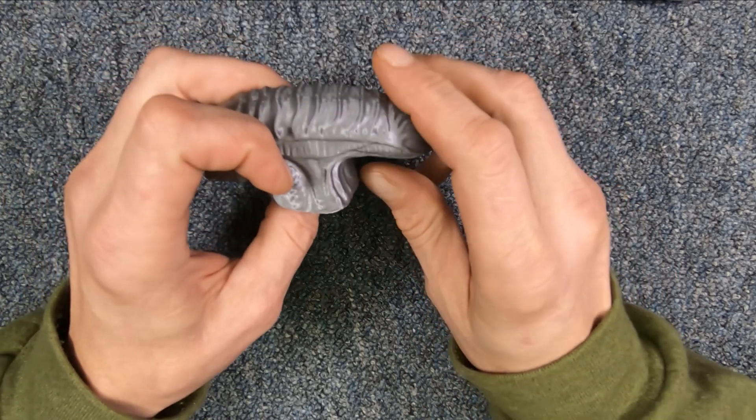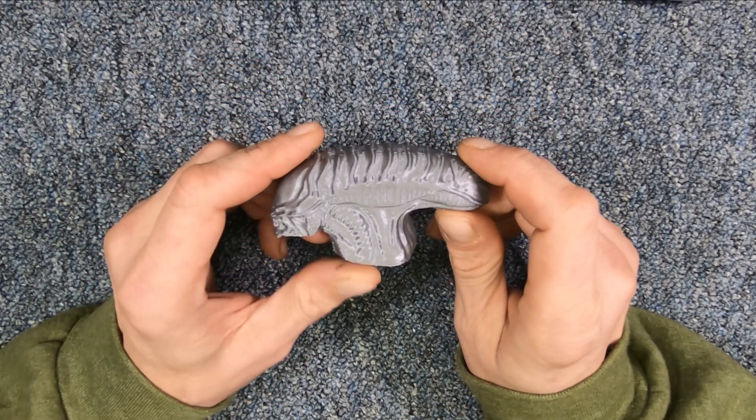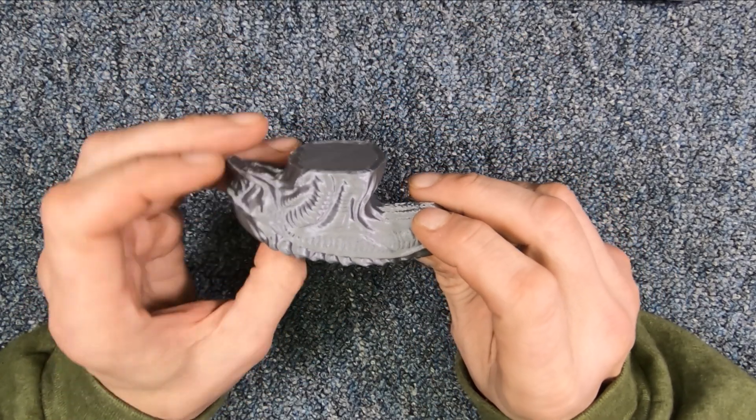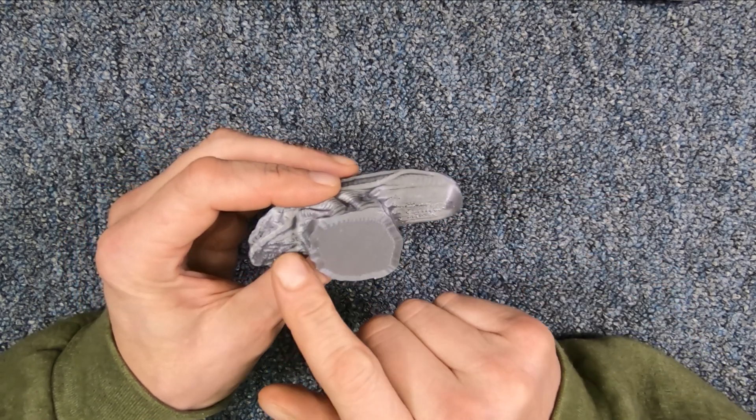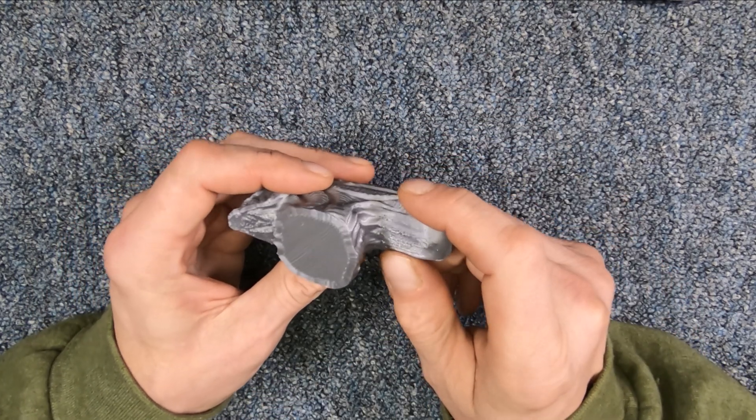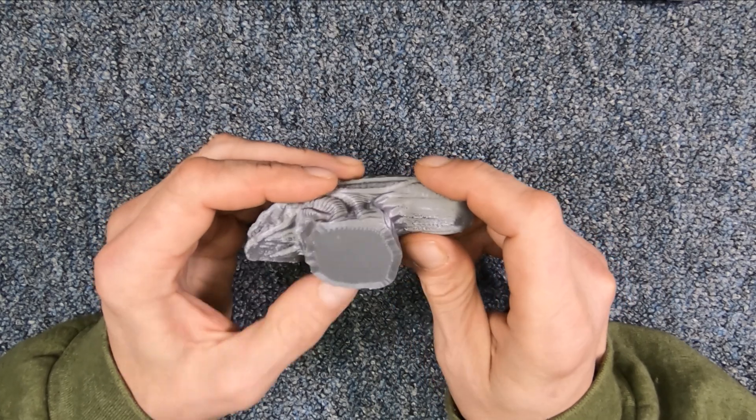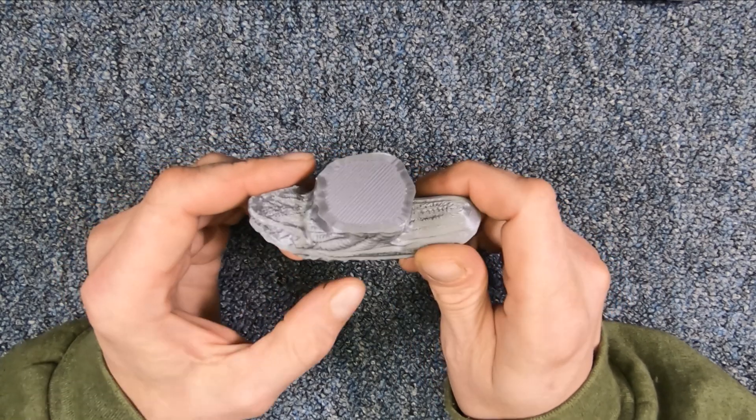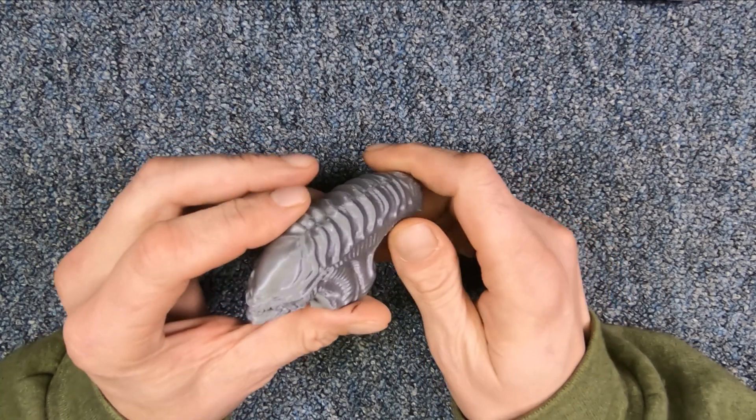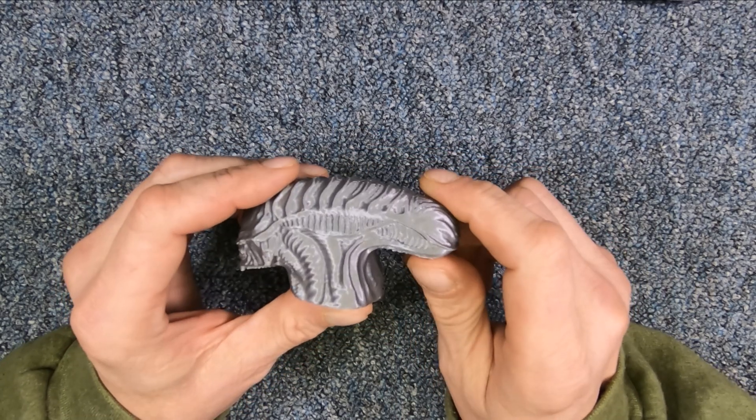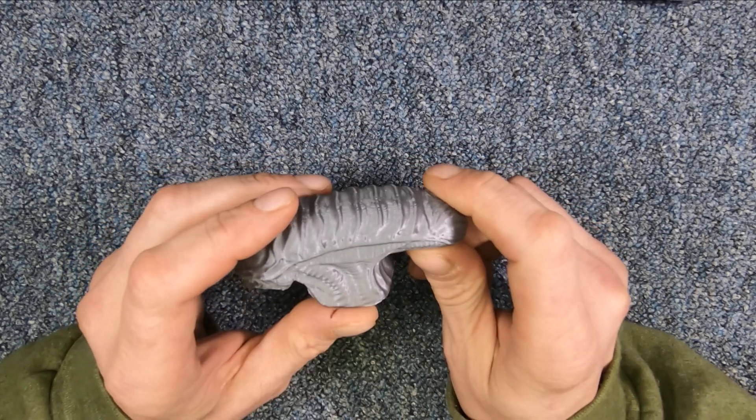So then I went and I wanted to print something that had supports. So I found this alien head model. And it had supports down here and they came right off, not too bad down here at all. Once again, printed great. Printed this at a layer height of 0.2 and a temperature of 200.